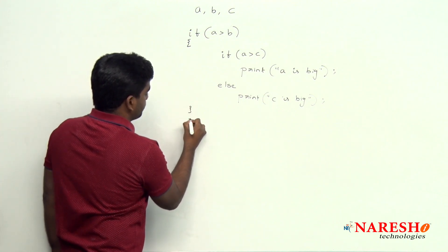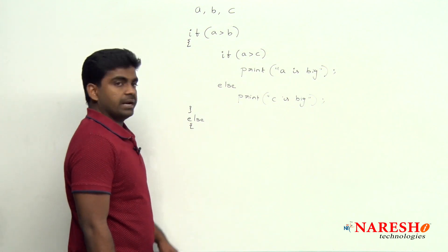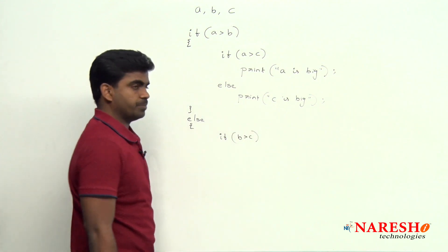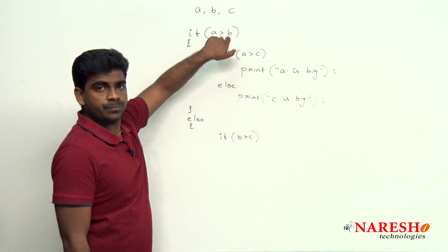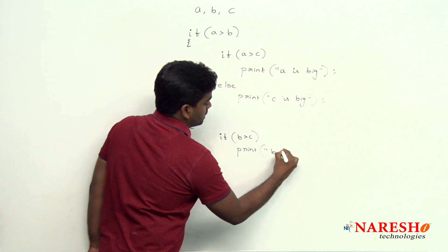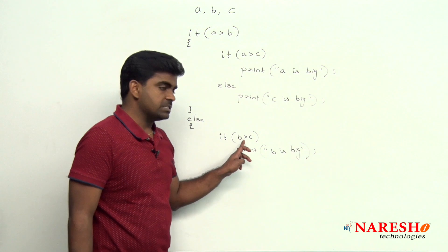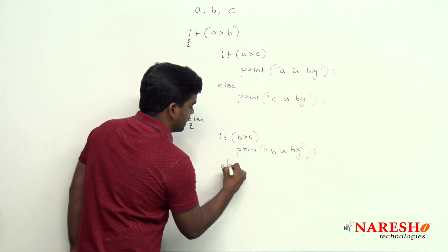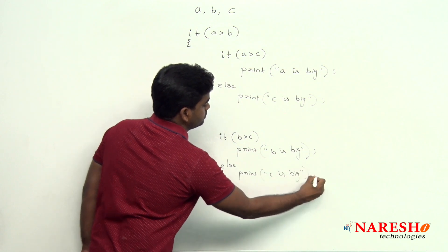So here we are writing else, and inside we are checking if b is greater than c. b is greater than a, no need to check, here we already proved. So if b is greater than c, just print b is big. And the same situation, suppose if it has failed, if b is greater than c has failed, then else block gets executed, print c is big.